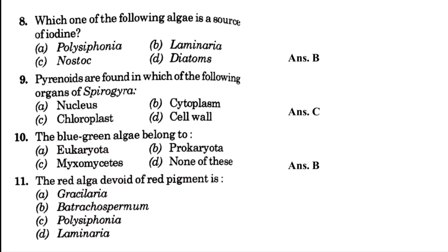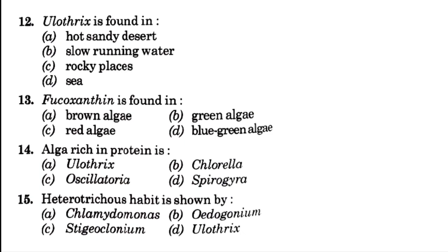The red alga devoid of a red pigment is — blank. Options are Gracilaria, Batrachospermum, Polysiphonia, and Laminaria. The answer is Batrachospermum, that is option B. Ulothrix is found in — blank: hot sandy desert, slow running water, rocky places, or sea. The answer is option B, that is slow running water.